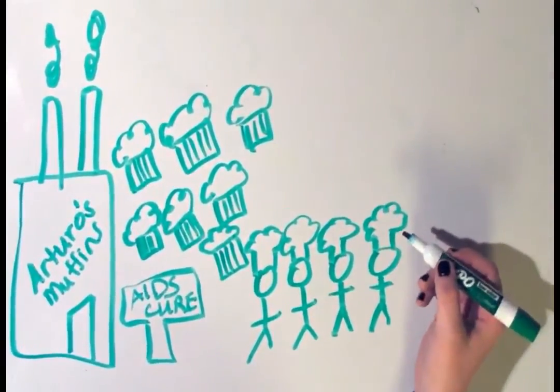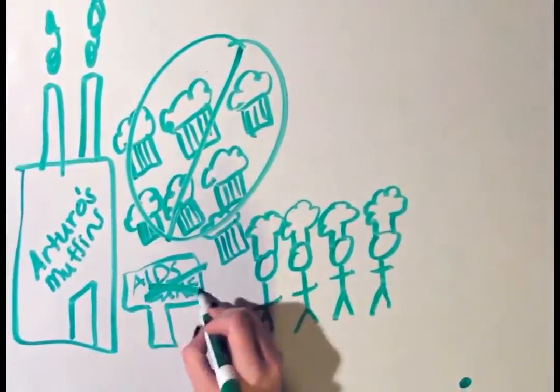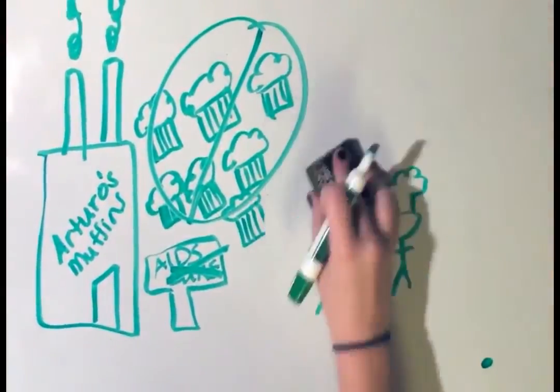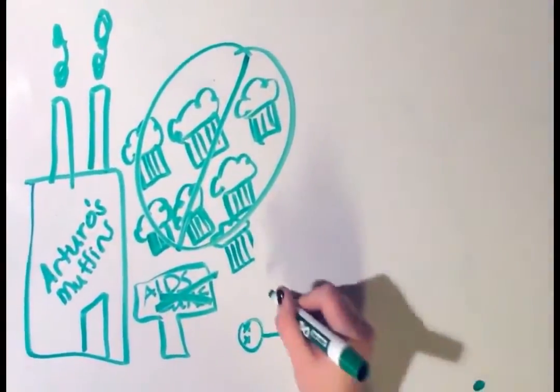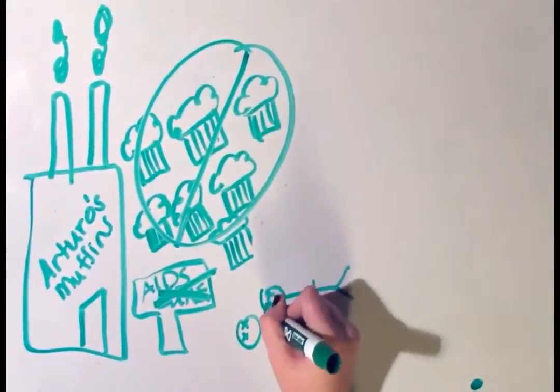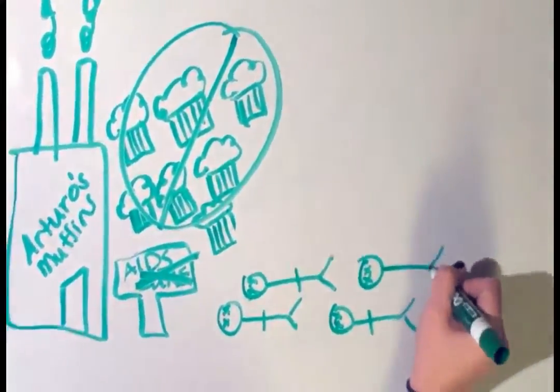However, if this secret ingredient is discovered to actually be cyanide, the demand for Arturo's Muffins would decrease, as well as his demand for workers. This concept is called derived factor demand, and states that the demand for labor in an industry correlates directly to the demand for their produced product.